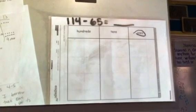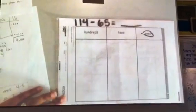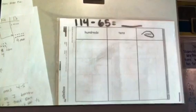When using the chip model to subtract, we only draw the larger number. So for 114 minus 65, I will only draw in 114.